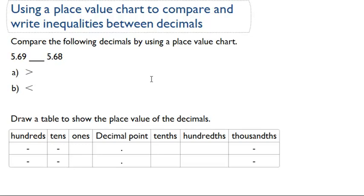In this first example, we're asked to compare the following decimals by using a place value chart. We have 5.69 and 5.68.